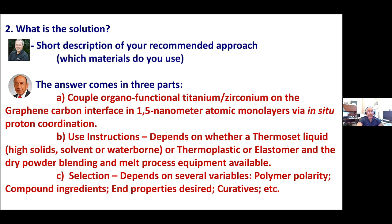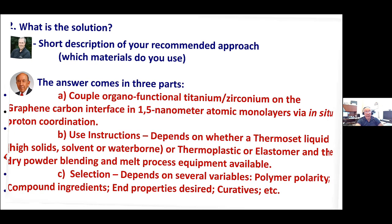Many times you come into systems where they're already using surfactants and other materials which really interfere with the interface, and you've got to work out running controls on the controls. How do we get there from here? Graphene is offered as master batches in water and organic systems. Straight graphene by itself is problematic in many operations because of the nature of nanomaterials and their handling. It's much better to have a master batch.